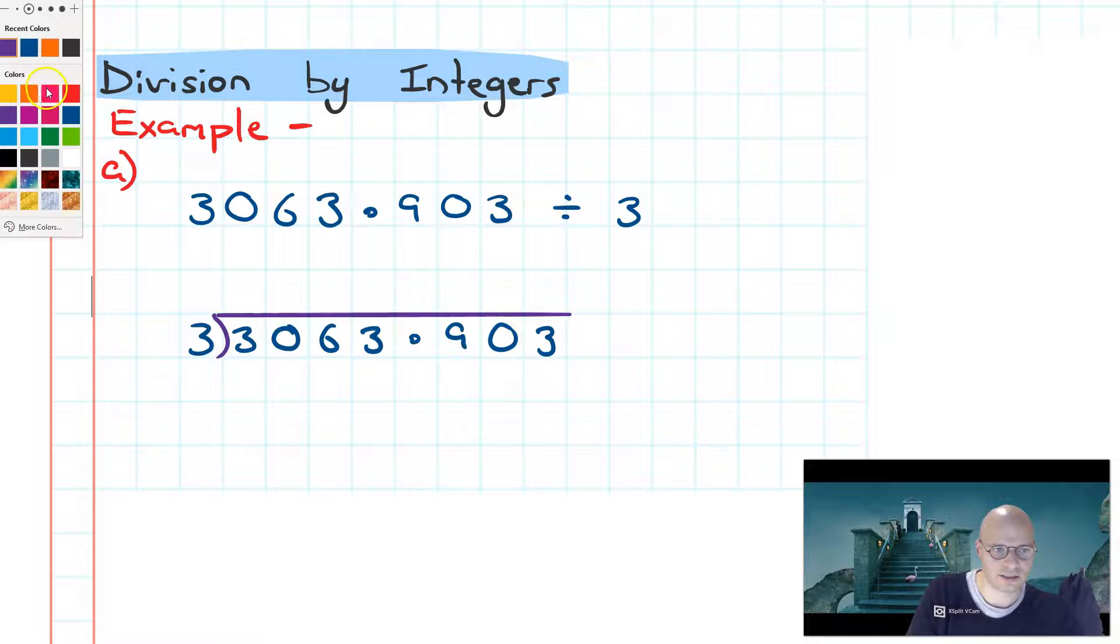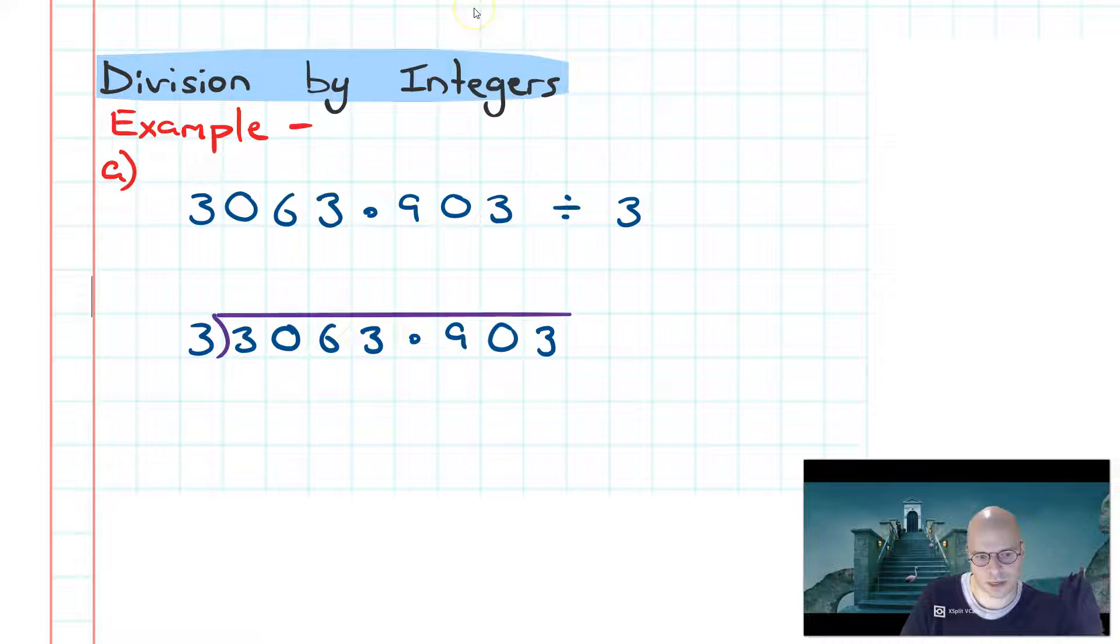Now I need to start dividing. My divisor is here, and I'm going to work my way across one number at a time. Starting off, how many times can I fit 3 inside of 3? Three ones are three, so therefore three goes into three once. Moving across, three fits into zero zero times. Three fits into six twice. Three fits into three once. I get the decimal point and it instantly goes upstairs. Three fits into nine three times. Three fits into zero zero times and three fits into three once.